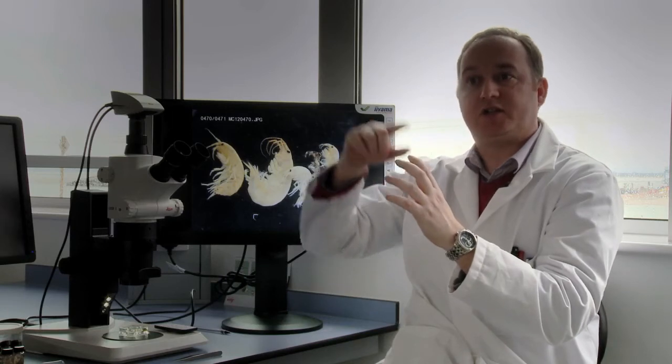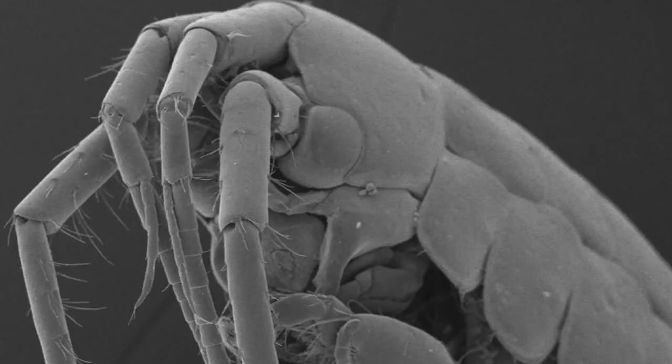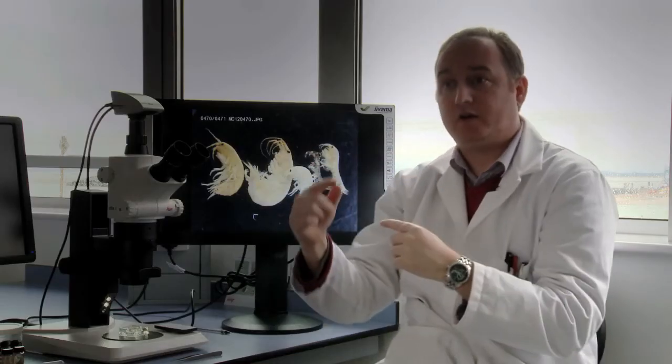They may go through a snail into a crustacean and then eventually end up in a bird or a fish. If our alien species hold some of these parasites, it might give us an indication that they're getting integrated within our food webs.